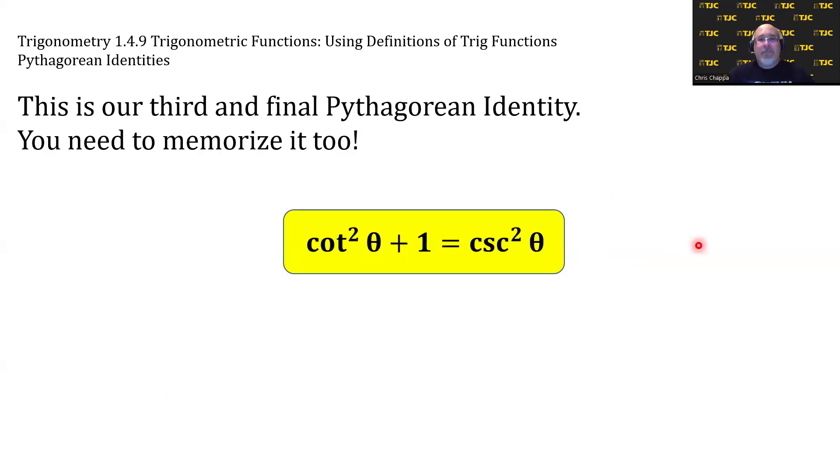So here's our third and final Pythagorean identity. And you need to memorize it too. Cotangent squared of theta plus one equals cosecant squared of theta.